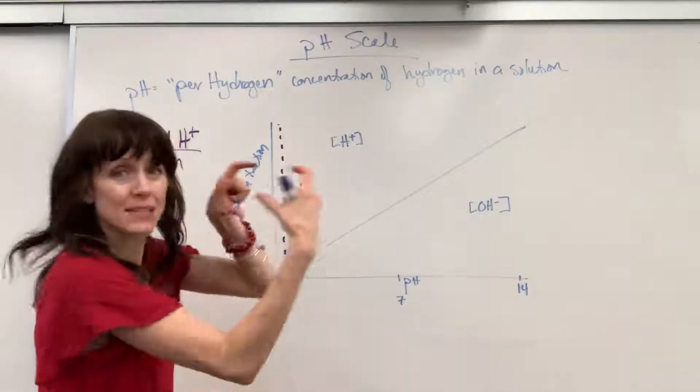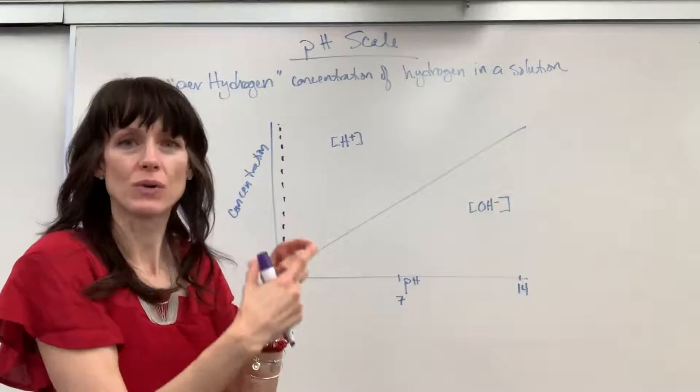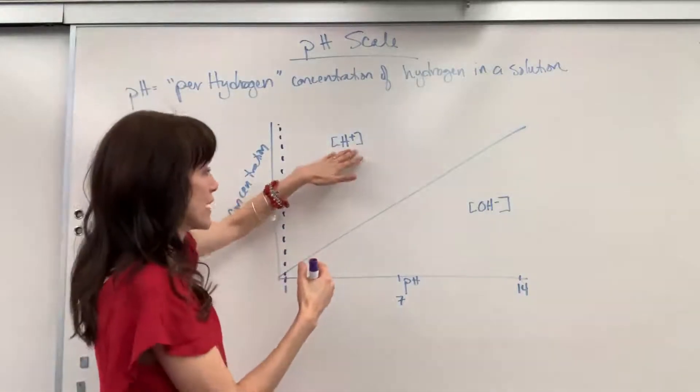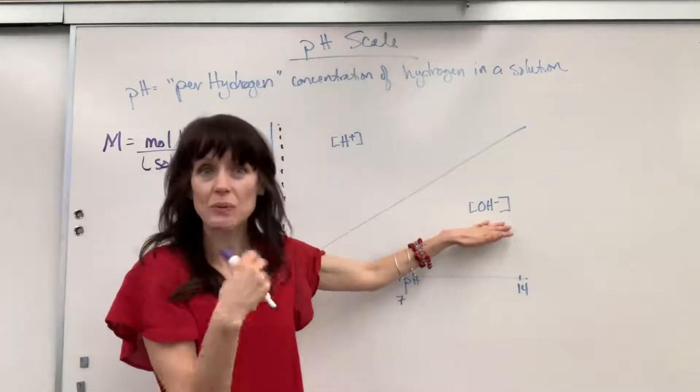And notice how I wrote these. I did them in the brackets. Recall that bracket is code for molarity, moles per liter. Here molarity, moles of hydrogen per liter of solution, and here is going to be the moles of hydroxide per liters of solution.